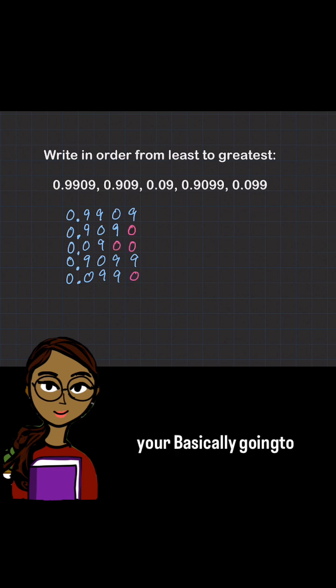Okay, then once you have this, you're basically going to rewrite each number, but without the decimal or the zeros in the front.